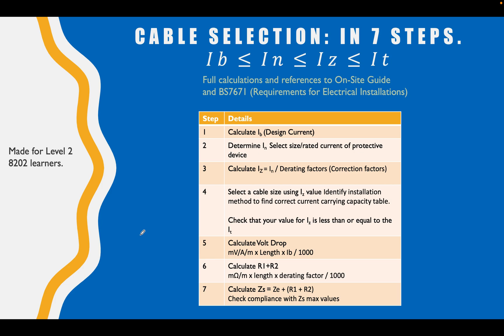I've made seven videos for you, a series about cable selection - the design and selection of the correct size cable for an installation. If you look on the screen here, I'll give a breakdown of what we're going to go through, step one to seven. This is aimed at and made for level 2 8202 learners doing the electrical installation course. This is the level they make you do cable selection to, the expectations up to here for level two.